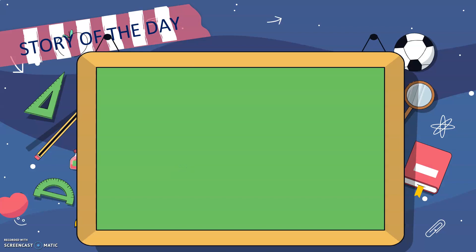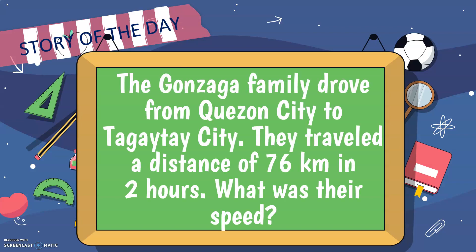Hello everyone! In today's lesson, we'll talk about speed, distance, and time. Let's start with a short story. The Gonzaga family drove from Quezon City to Tagaytay City. They traveled a distance of 76 kilometers in 2 hours. What was their speed?